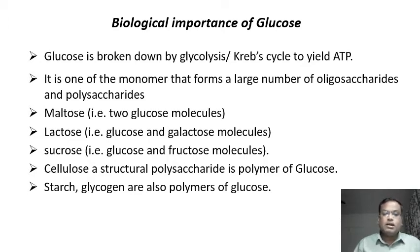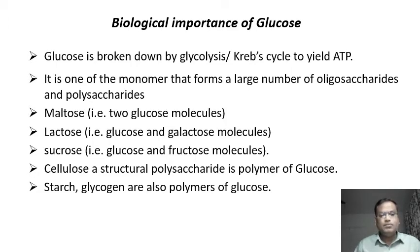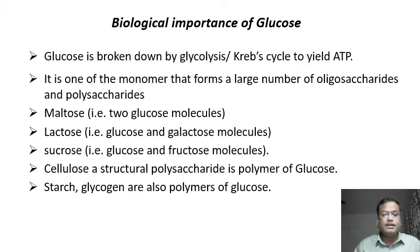Glucose is broken down by glycolysis and the Krebs cycle to produce ATPs. These ATPs are used for various metabolic activities in the cell. Glucose is also one of the monomers that forms a large number of oligosaccharides and polysaccharides.